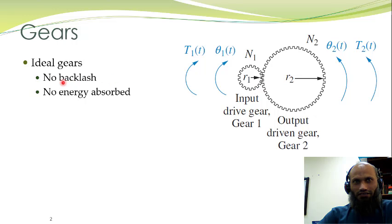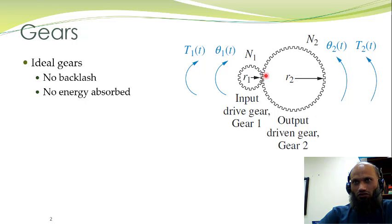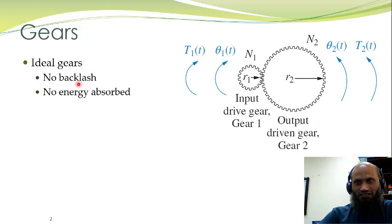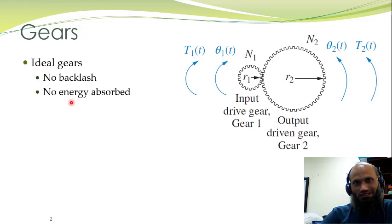In our mathematical modeling of mechanical systems we shall assume ideal gears. In ideal gears there is no backlash. Backlash refers to the gap between the teeth of the input gear and the teeth of the output gear; practically the input gear may start moving but the output gear does not move due to this backlash. In our analysis we shall assume there is no backlash.